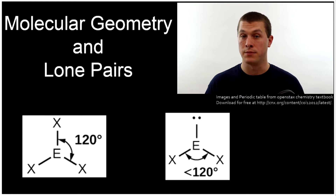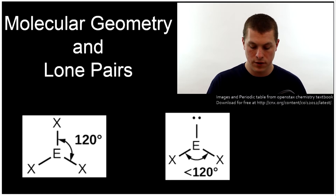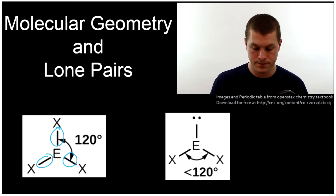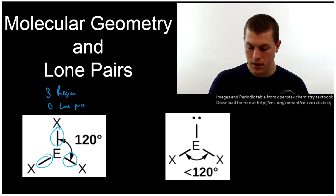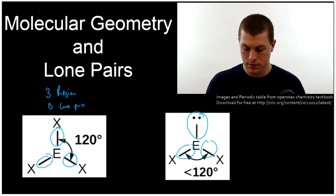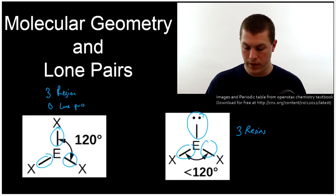We can think about the difference from the Lewis structures shown. If we look on the left, we notice it has one, two, three regions of electron density — that is, bonds or lone pairs — and it has zero lone pairs; all of those are atoms around it. Meanwhile, on the right we still have one, two, three regions of electron density, because remember lone pairs or bonds both count for those, but we have one lone pair.